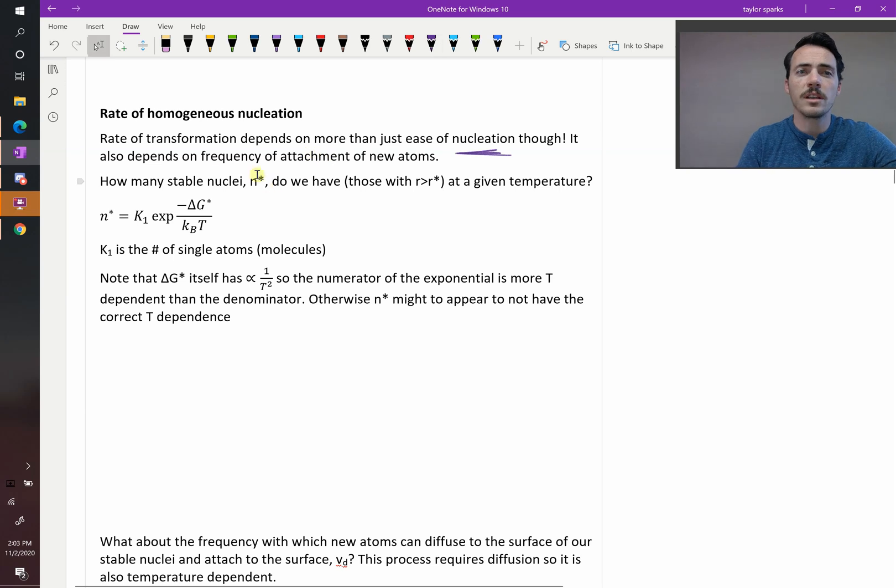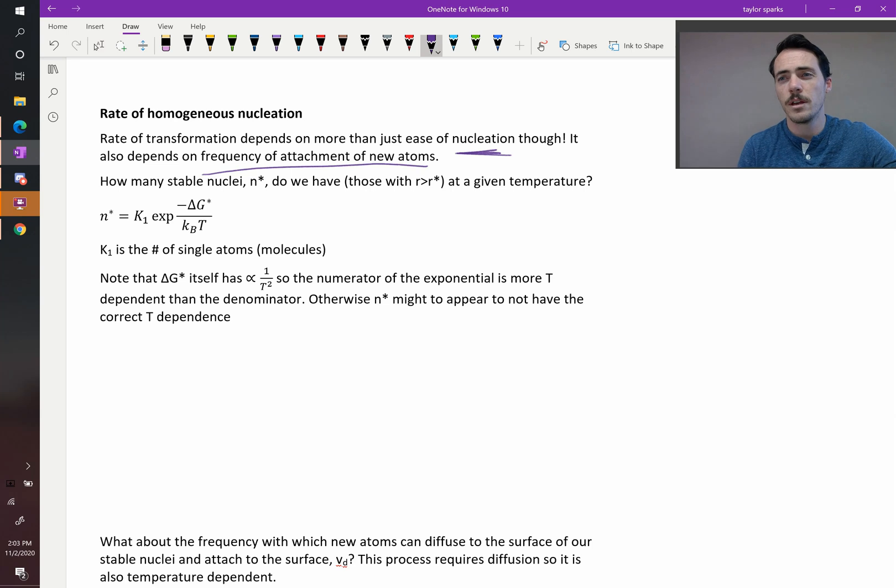So first off, the first thing we need to do is we need to calculate, but it also depends on the frequency of attachment of new atoms. So let's calculate these two things. First off, how do we calculate the number of stable nuclei, N-star, that we have at any given point? Well, we have an expression for it.